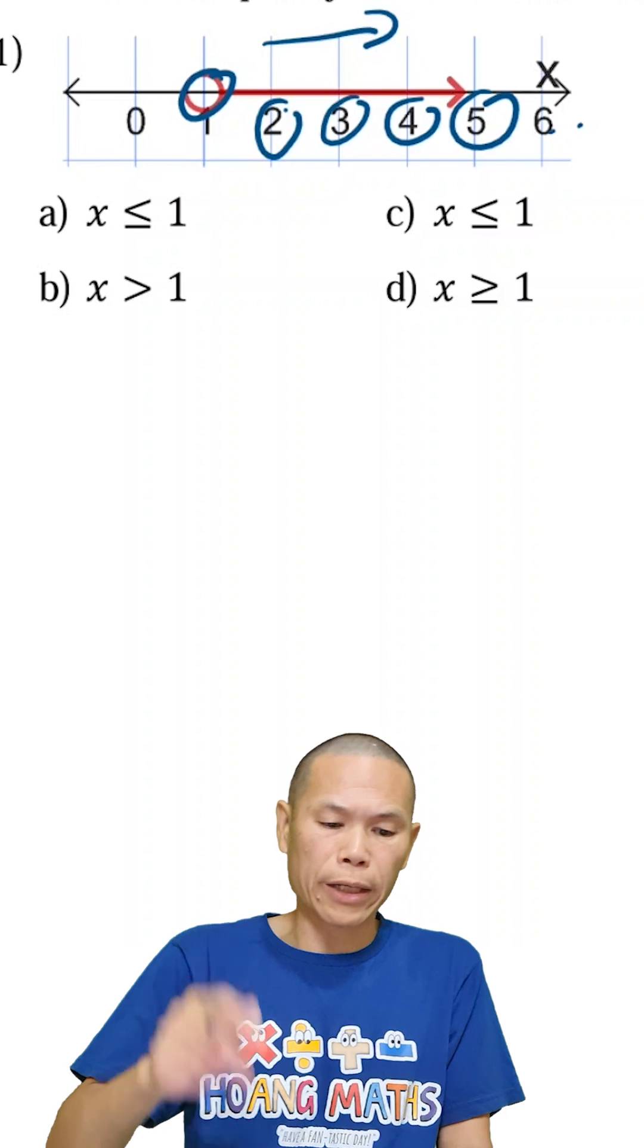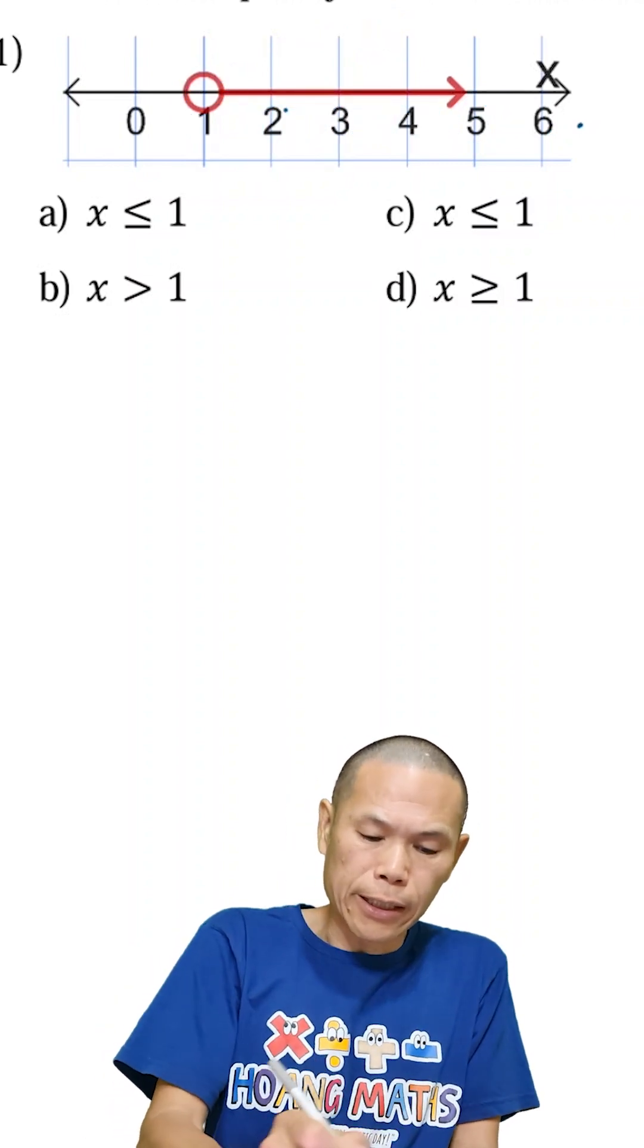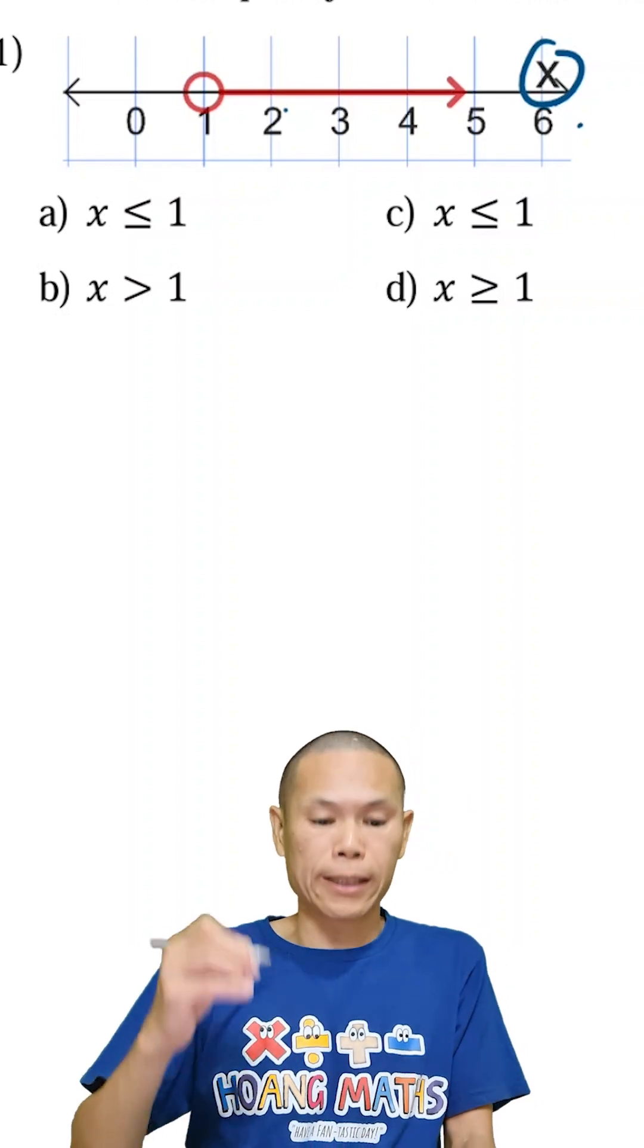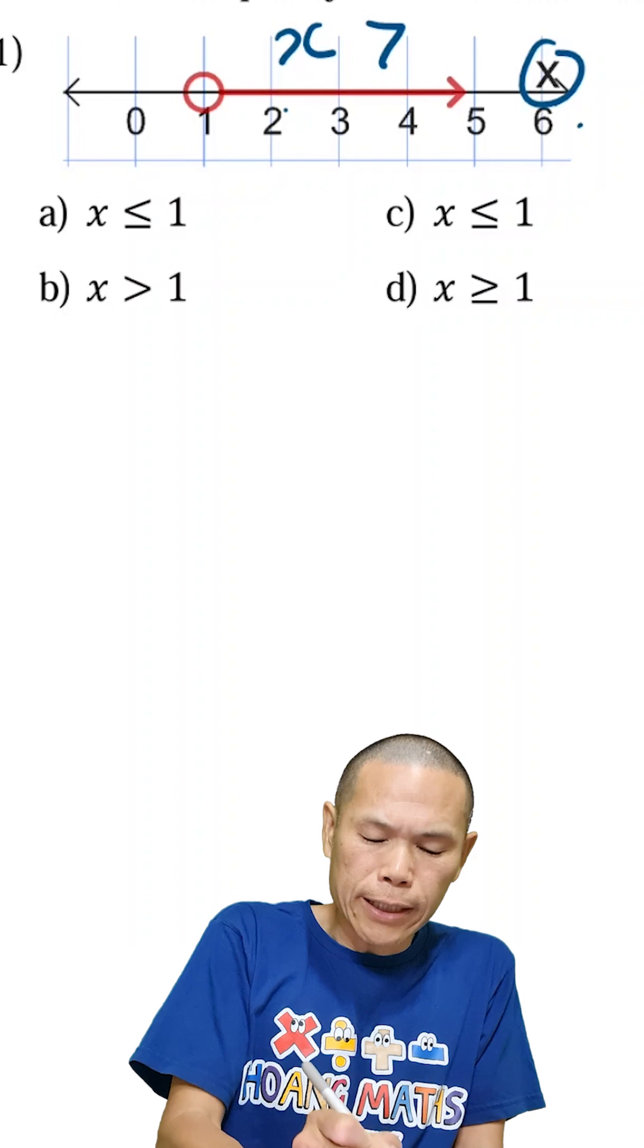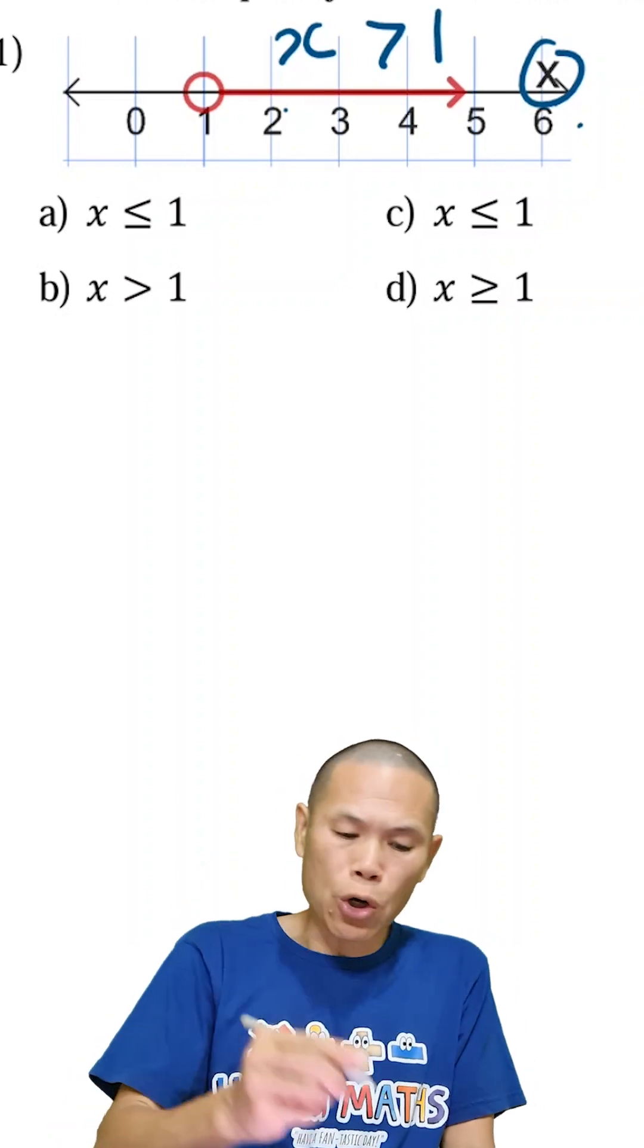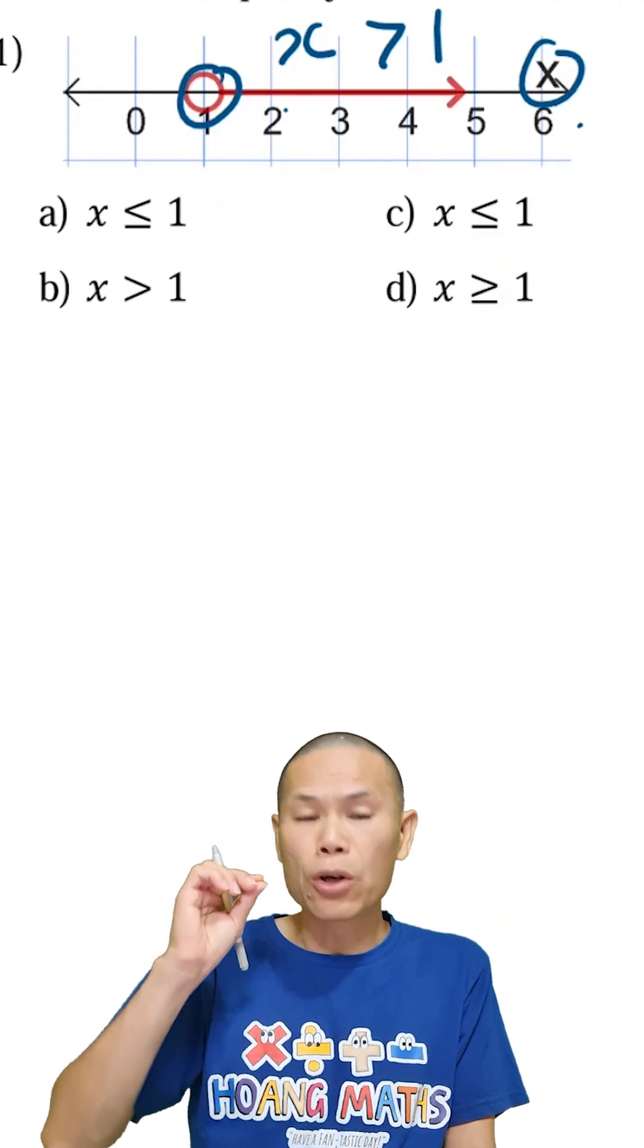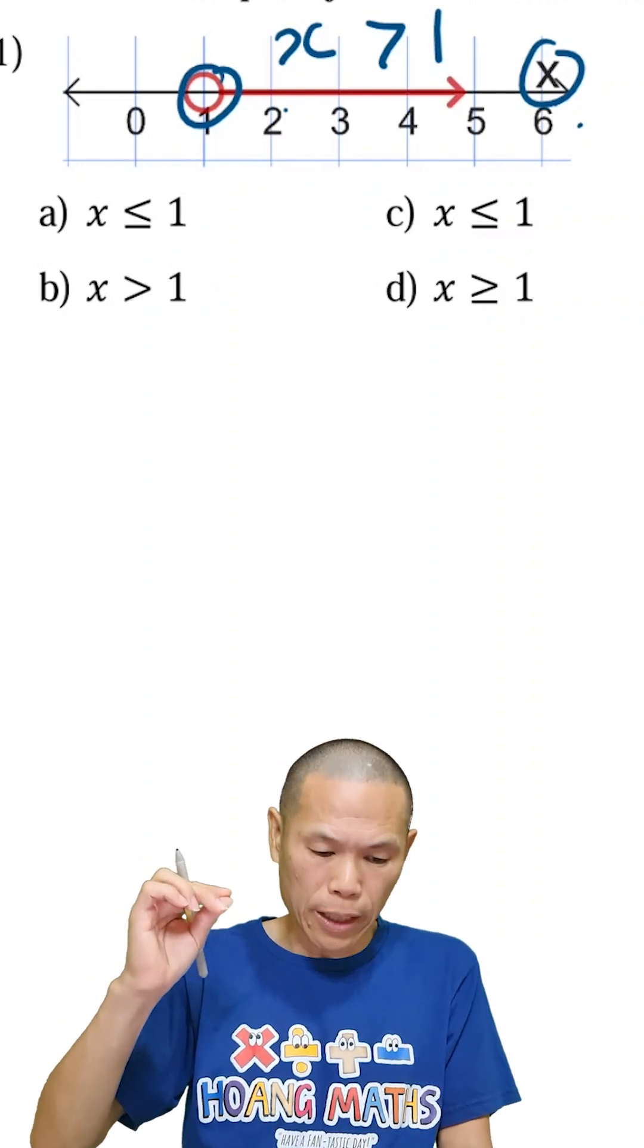So we can write like this: x is these numbers. This is x. So two, three, four, five, six is x. So that means x is greater than one. And that's it, because the circle here is empty, so that means not including one. So x is greater than one.